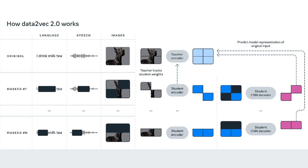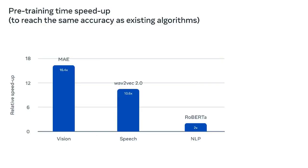But modern systems can be computationally demanding, as training very large models requires many GPUs. To better understand how much more efficient Data2Vec 2.0 is compared to its predecessor and other algorithms, we tested it on computer vision, speech, and text tasks on widely used benchmarks.